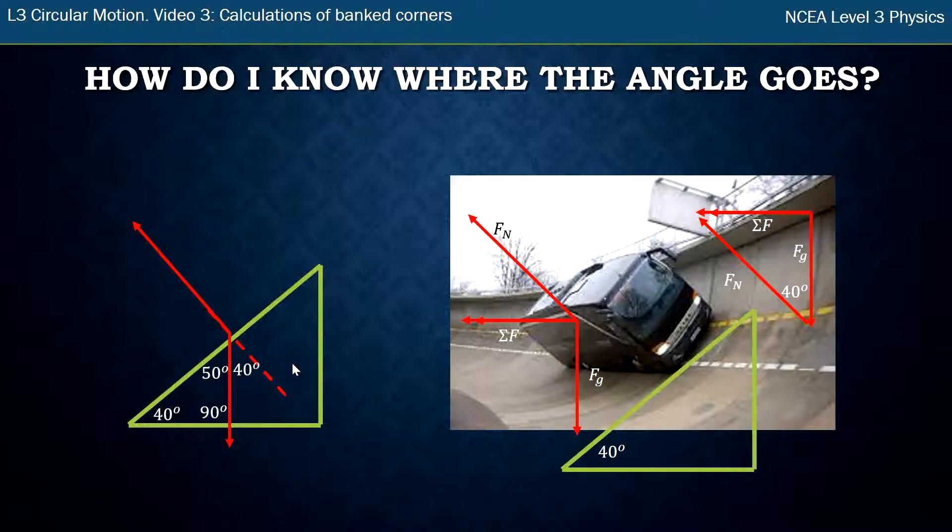Then if I extend my gravity upwards, then the rule for opposite angles are the same. So that's also 40 degrees and that's part of my triangle that I've drawn. Here's the vertical, you can see it up on the right hand side of the bus and my normal force, and the one down there is 40 degrees. That's how I find it mathematically.